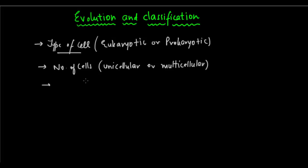The next factor we take into consideration after the number of cells is the mode of nutrition - whether it's autotrophic or heterotrophic.